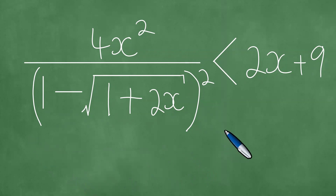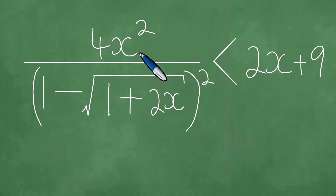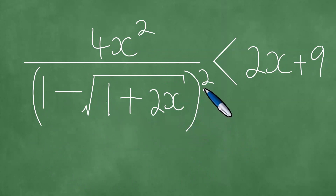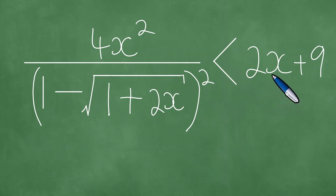We have this particular inequality in front of us. We have been given 5x squared divided by open bracket 1 minus the square root of 1 plus 2x, close bracket squared, where we are squaring the denominator, and this is less than 2x plus 9.